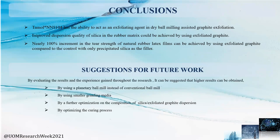We also have suggestions for future work. Higher results can be obtained by using a planetary ball mill instead of a conventional ball mill — in a conventional ball mill the rotational axis is horizontal, while in a planetary ball mill it is vertical. Using smaller grinding media, we could achieve fewer layers in the final exfoliated graphite. Additionally, the preparation technique of silica and exfoliated graphite aqueous dispersions can be optimized, which will directly affect the final results. The curing process of the rubber latex films can also be optimized. Since introducing graphite into natural rubber latex matrix is known to affect thermal conductivity properties of the final rubber vulcanizate, this can be pursued as a further detailed research topic.